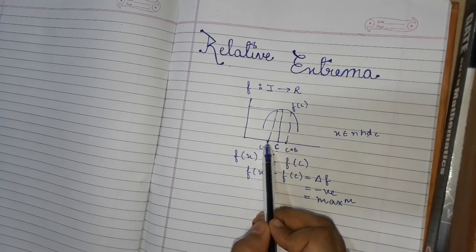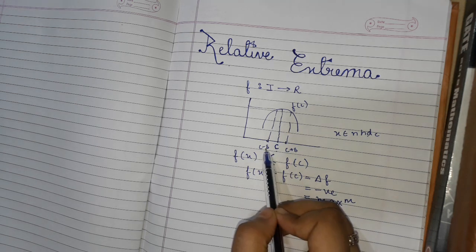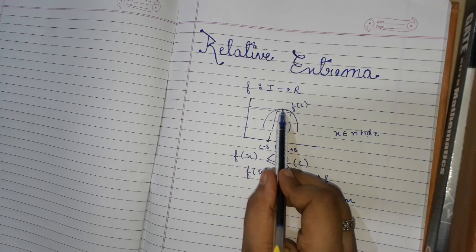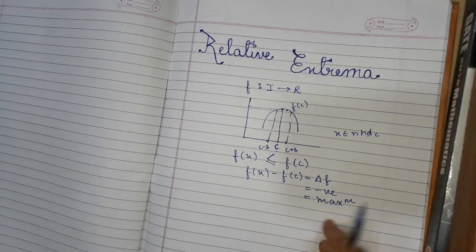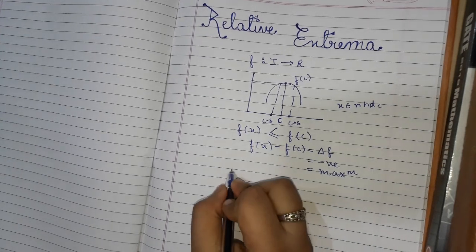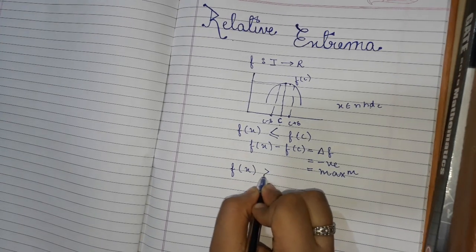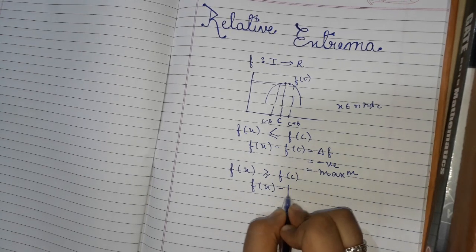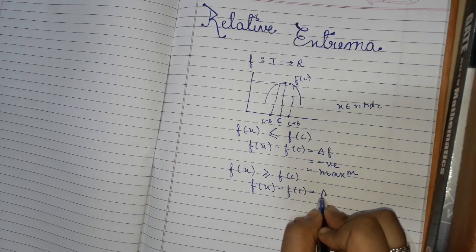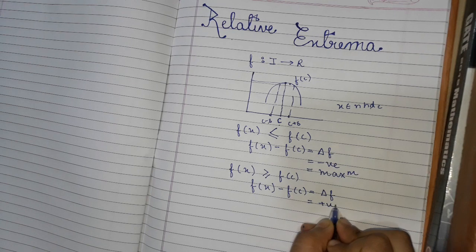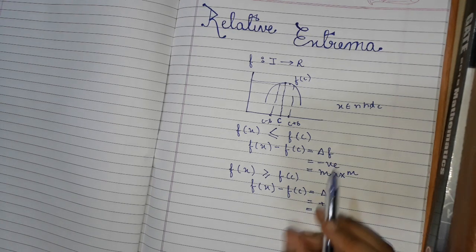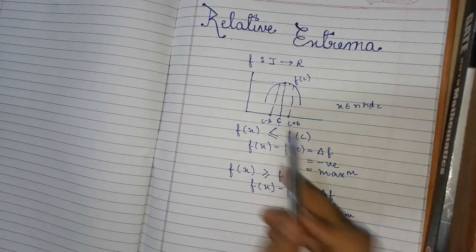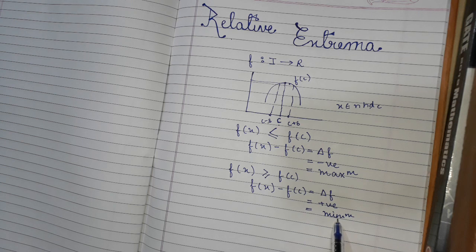Clearly from the graph we can see that if we take a point x such that f(x) is greater than or equal to f(c), that is f(x) minus f(c) is a positive quantity, then we say that relative minima exists at that point c.